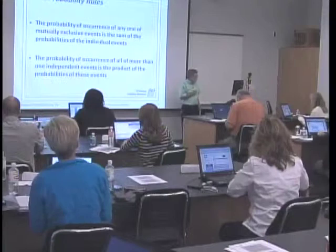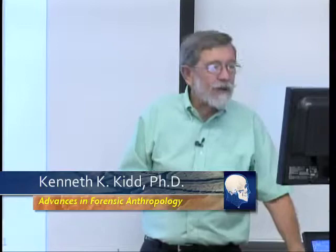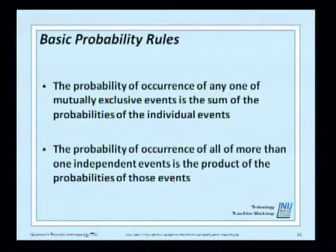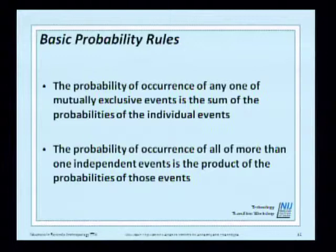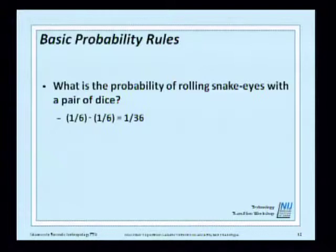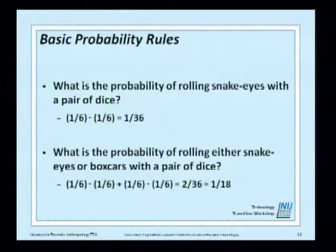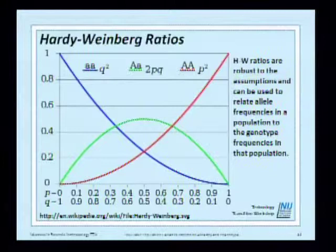Start off with some basic rules of probability. You should all know these, even intuitively, if you don't know them from mathematics. If you've got mutually exclusive events and you want one or the other, their probabilities is the sum. If you've got events that are not mutually exclusive and you want both to occur, you're dealing with the product of the probabilities. So thinking in terms of gambling, rolling snake eyes, probability is just one in 36. Either snake eyes or boxcars is the sum of those two probabilities, or one in 18.